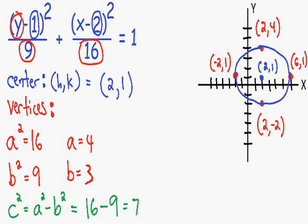Since c squared equals 7, we find c by taking the square root: c equals the square root of 7. The square root of 7 is between the square root of 4, which is 2, and the square root of 9, which is 3 — so it's between 2 and 3, a little bit closer to 3. I would say the value is just a little bit less than 3.